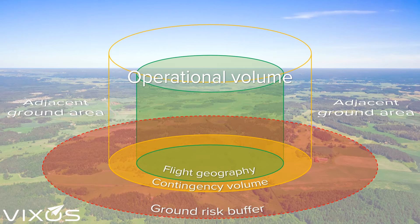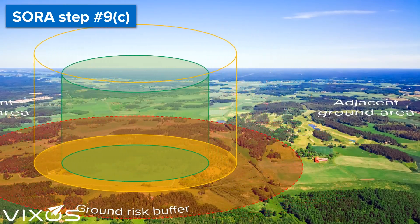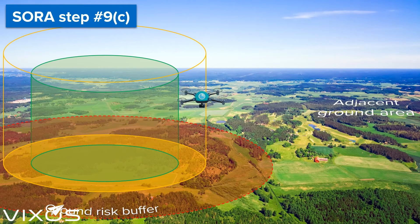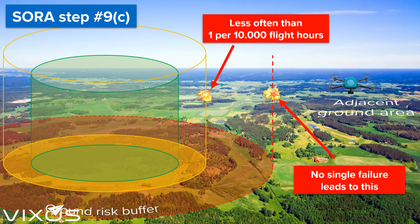Let us now see how this relates to step 9 part C. Again, we have your drone. It takes off, flies for a bit, and again we have a flyaway. In this case it exits not only the operational volume, but also the ground risk buffer, and flies out over the adjacent ground area. Step 9 part C says that the first event — exiting the operational volume — must happen less often than once per 10,000 flight hours, while for the second event — crossing the ground risk buffer — no single failure must lead to it.